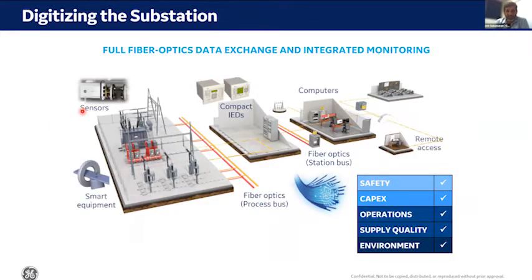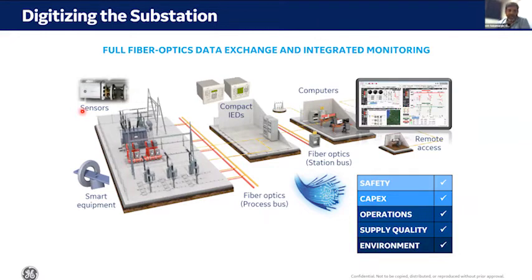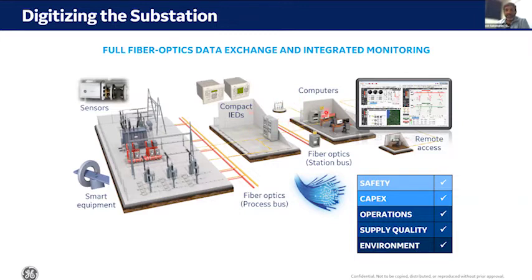This architecture, as seen in previous presentations, shows that from the switchyard the conventional cabling has been replaced by fiber optics. On the switchyard side, smart equipment such as digital CTs/VTs or sensors convert analog values into digital values. In the control and protection room, we have compact IEDs — no need for conventional large-size IEDs with lots of inputs, outputs, and cables. The key difference from a conventional substation is that the cable from switchyard to control room is replaced by fiber optic, with digitization happening at the process side itself.